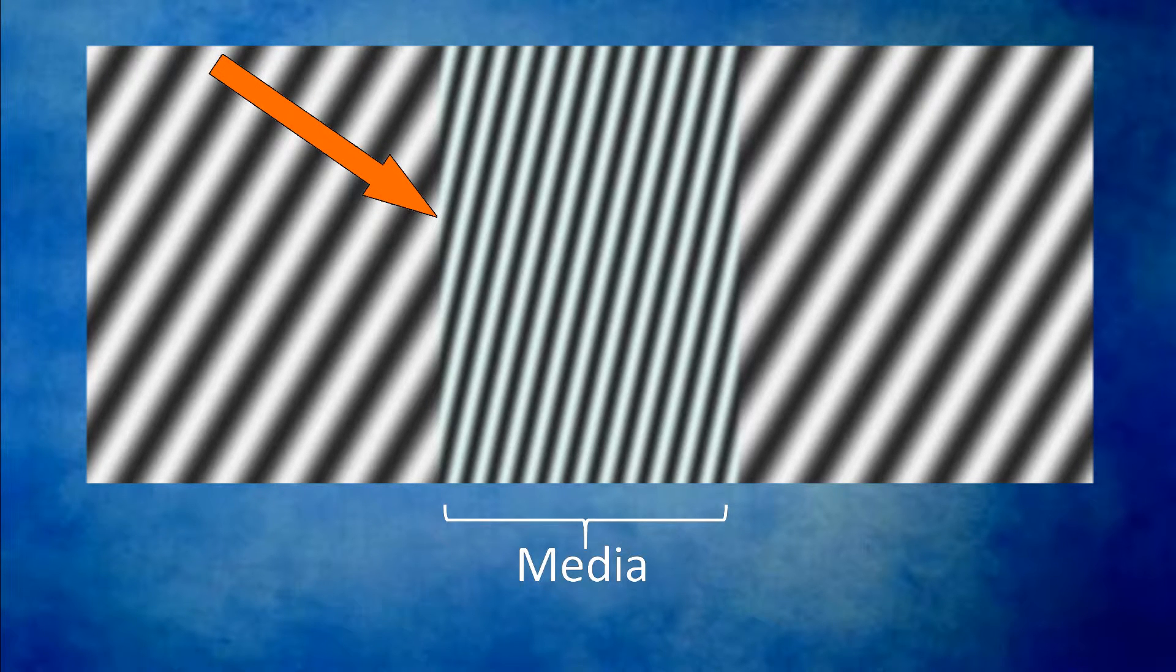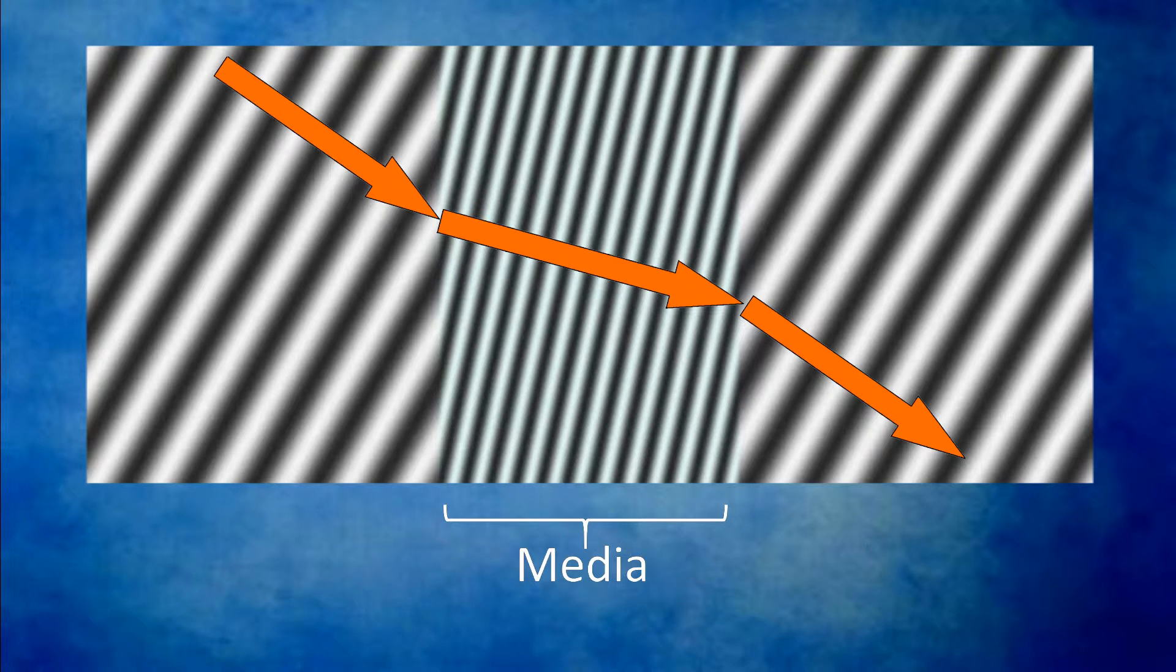The result is that the direction of the wave front changes. When light moves from a lower index of refraction to a higher index of refraction, the angle decreases. When going from a higher to a lower index of refraction, the angle increases. This effect is refraction. The light bends.